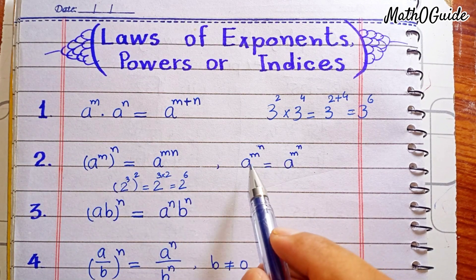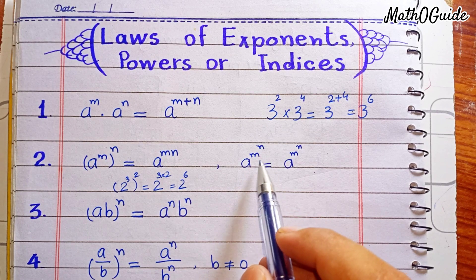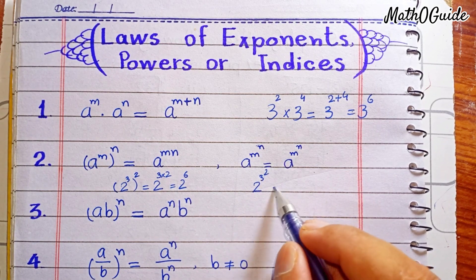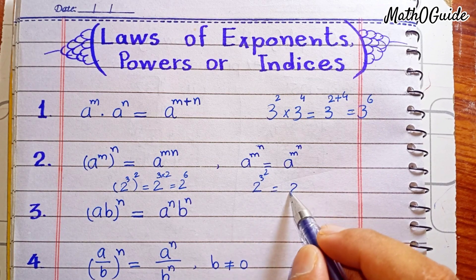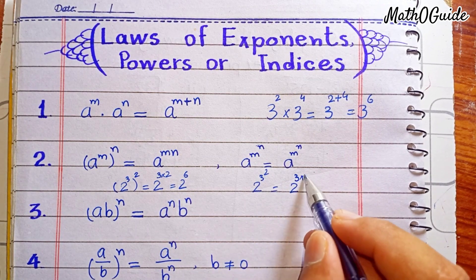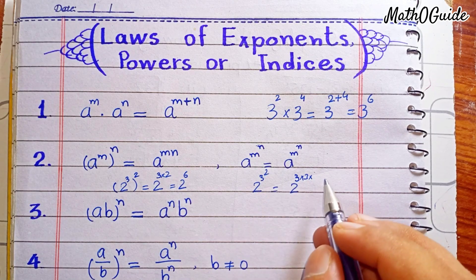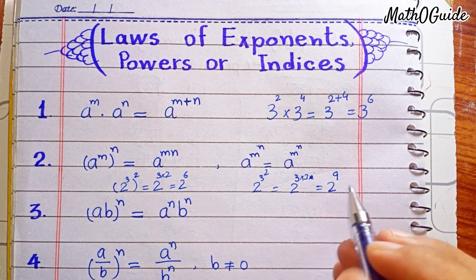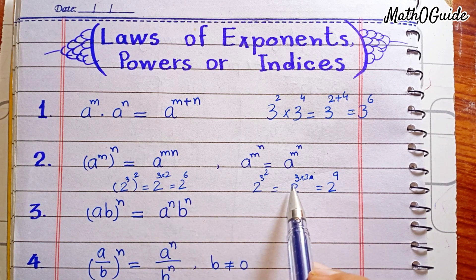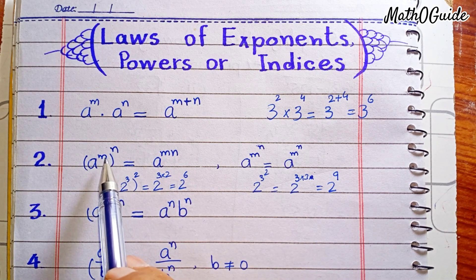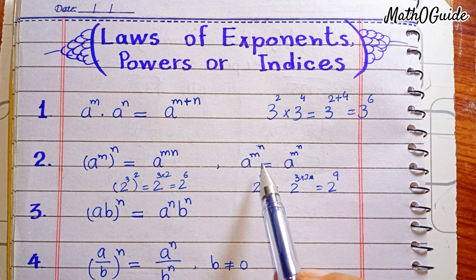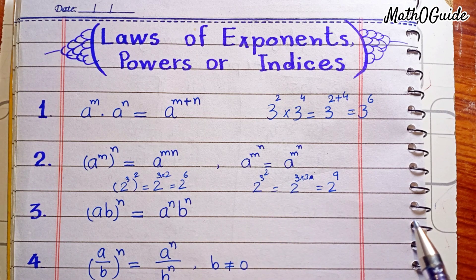Another form of this rule is a raised to power m raised to power n with no bracket. When there is no bracket, you solve the outer power first: 3 raised to power 2 means 3 multiplying 2 times, so you compute 3 multiplied by 3 to get 9, giving 2 raised to power 9. The key difference is: with brackets, multiply the inner and outer powers; without brackets, evaluate the outer exponent first.